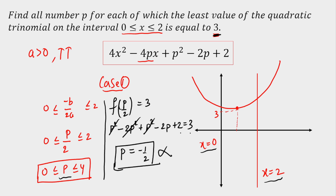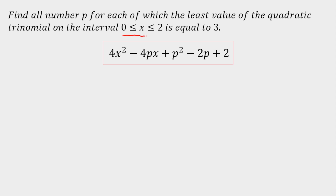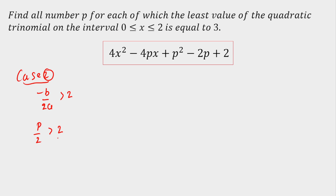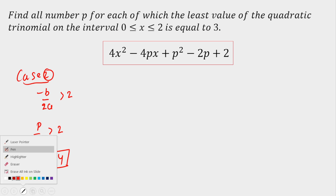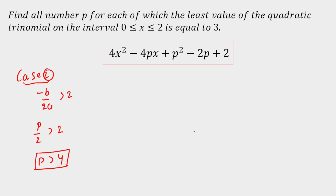Next, we move to Case 2. In the previous case, I took the vertex from 0 to 2. This time, I'm going to take the vertex on the right-hand side of 2. Case 2 is: -B/2A should be greater than 2. I'm not taking equal to, since I covered that in Case 1. That means P/2 > 2, so P is greater than 4. This is the condition for the vertex to lie on the right-hand side.